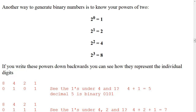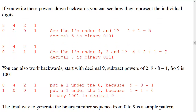Another way to generate binary numbers is to know your powers of 2. Two to the zero power is 1. Two to the first is 2. Two to the second is 4. Two to the third is 8. Writing these powers down in reverse — 8, 4, 2, 1 — and placing a binary number beneath them, such as 0101, the ones appear under 4 and 1. Four plus 1 equals 5, confirming that decimal 5 is binary 0101.